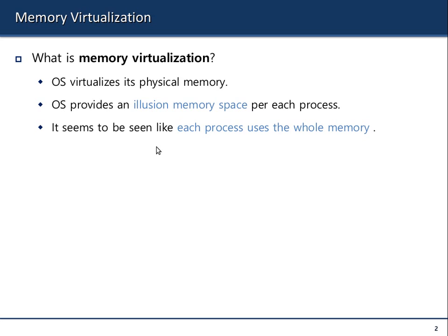In COMSCI 131, I showed you two instances of the same program running as two processes, opened in GDB. When you look at their memory addresses, they appear the same. But they can't share the same physical memory location — what you see in GDB is the virtual address, not necessarily the physical address.